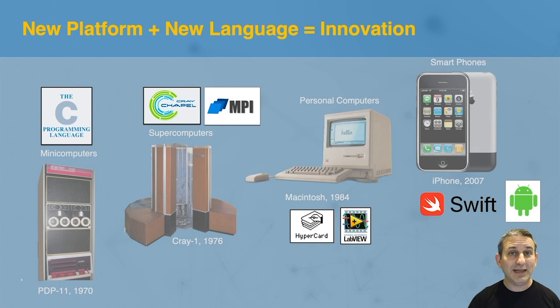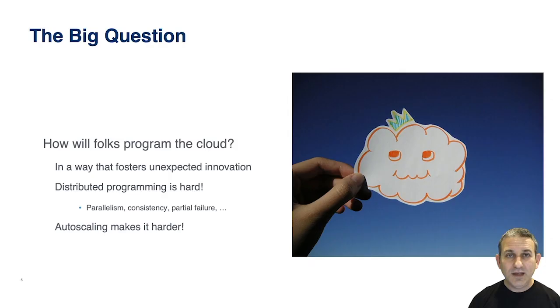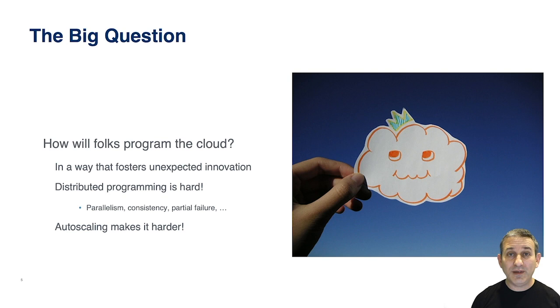We saw analogous things in supercomputers with the Chapel language, in graphical programming and personal computers with the WIMP interface, and most recently in smartphones, where new programming environments made it easier for application developers to build apps in ways no one ever would have expected would run on a telephone. Another platform that arose around the same time as the mobile phone was the cloud. And yet somehow the cloud doesn't have a programming environment that is native to it that enables third-party developers to produce things we never would have expected.